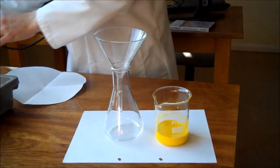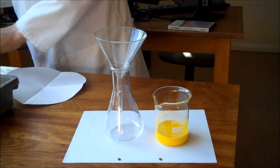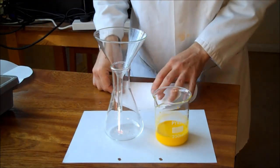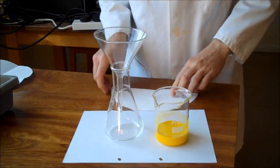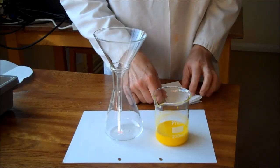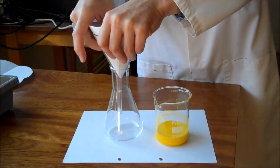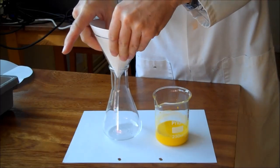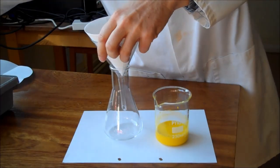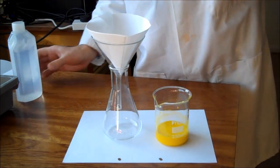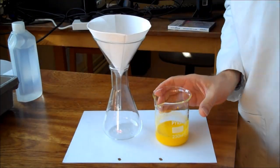Take filter paper, fold it in half, fold it in half again, and sit it in our filter funnel. To get it to sit properly you can sometimes just dampen it a bit so it sits in the funnel properly.